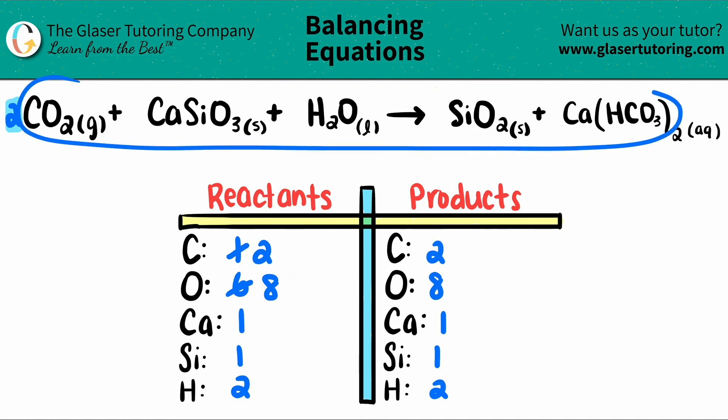And this is now our balanced equation. For every two CO2s, I have one CaSiO3 plus one H2O, which will produce one SiO2 and one Ca(HCO3)2. That's it.